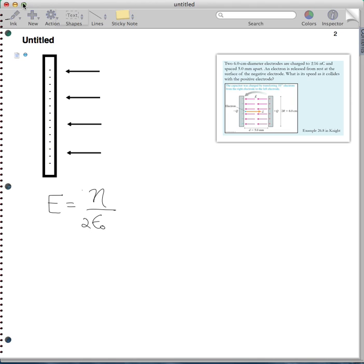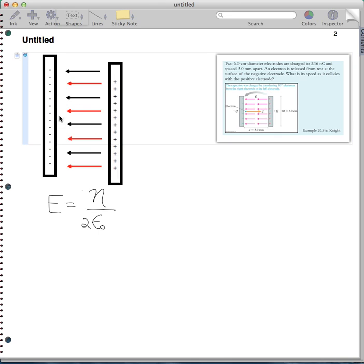So if we add in a second sheet of charge and now notice that the one on the left is negative and the one on the right is positive. So that means that our electric field is going to point away from the positive towards the negative. And you can see that we'll have twice the electric field. We add up these lines, the red and the black lines.